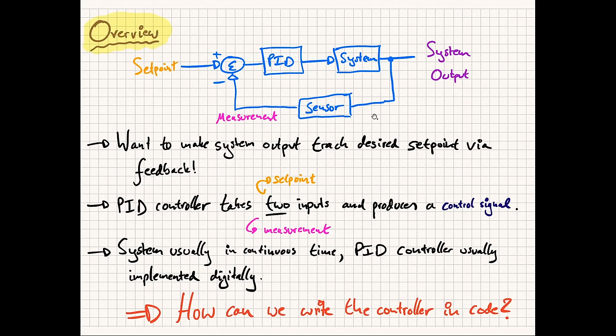Take for example, albeit a boring and rather simple one, that of an oven. The oven has a temperature dial — the setpoint — and a sensor which can provide a measurement of the current temperature in the oven. The oven's controller combines these two bits of information to turn the heating element on or off. If the measured temperature is lower than the setpoint, the heater is turned on; if higher than the setpoint, the heater is turned off.